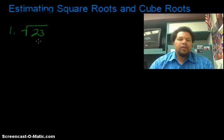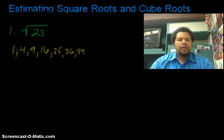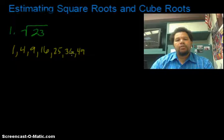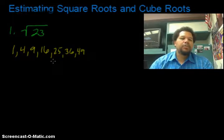So what I do is I start thinking of perfect square numbers, like these right here: 1, 4, 9, 16, 25, 36, 49. Those are all perfect square numbers.